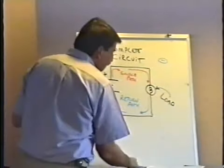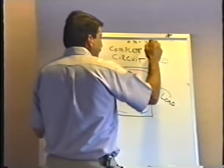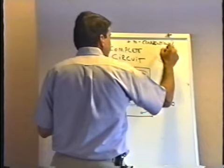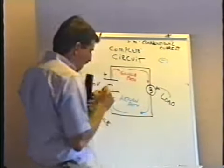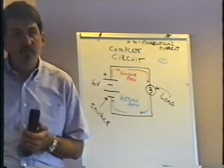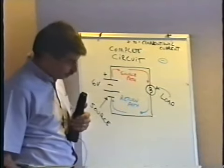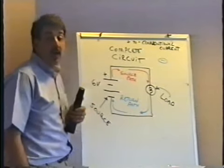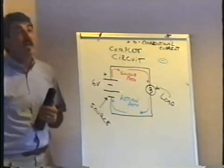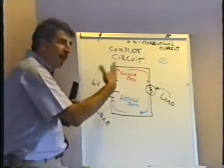When we discovered hundreds of years later that electricity is really these negatively charged electrons, they did not change the way they draw schematic diagrams. Schematic diagrams are still drawn as if electricity was some kind of invisible fluid flowing from positive to negative. This concept is known as conventional current — it isn't really the way electric current flows, but it's the way we draw schematic diagrams.